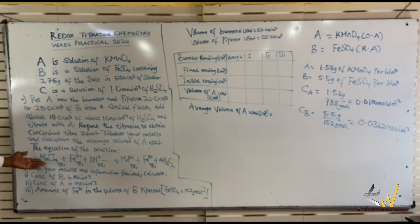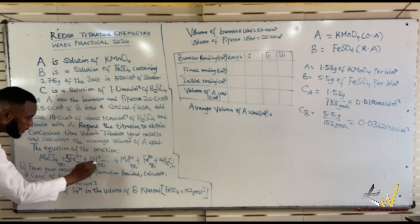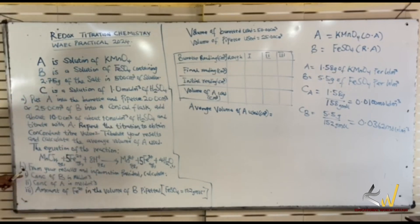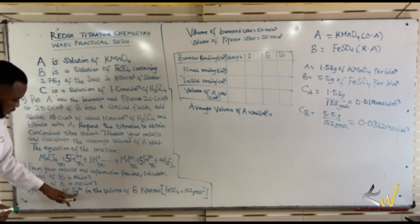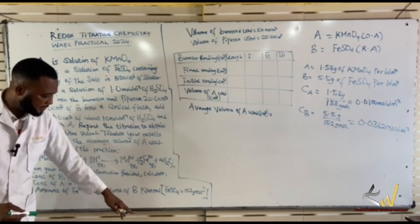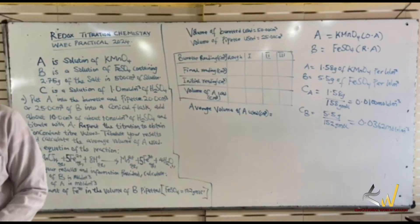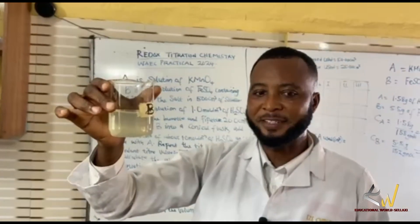The equation of reaction has 5 on this side and 5 on this side. From your results and information provided, calculate the concentration of B in mol/dm³, the concentration of A in mol/dm³, and the amount of Fe²⁺ ions in the volume of B pipetted. The molar mass of iron sulfate is given.